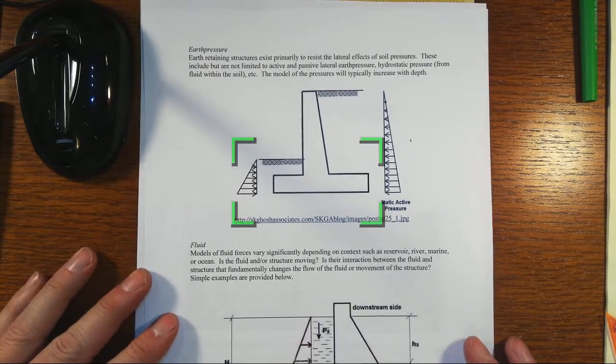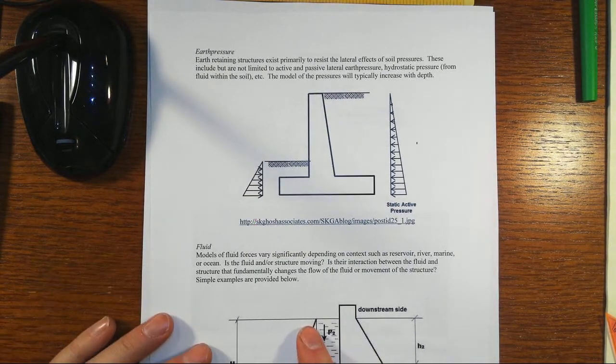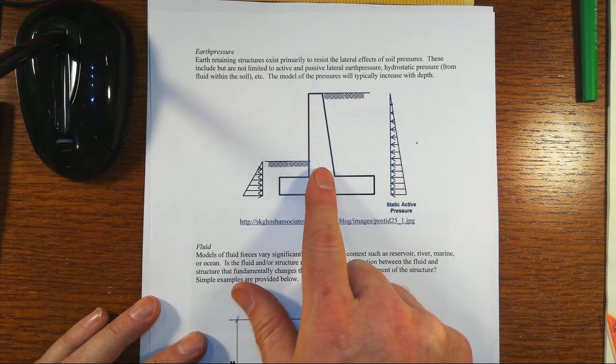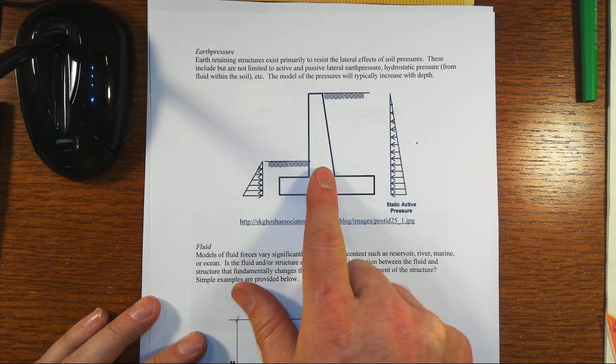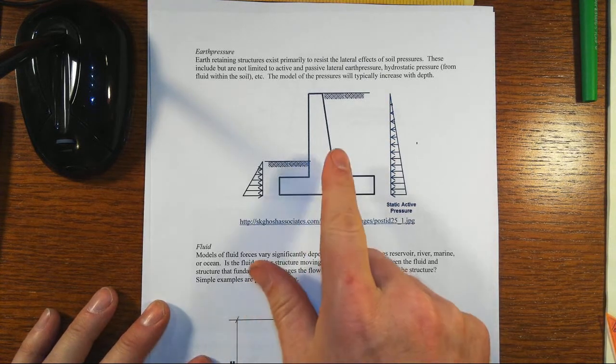Two more common types of lateral forces that our buildings or structures are resisting would be earth pressures. Retaining walls—that's their sole purpose in life—to resist the effects of soil pressures.